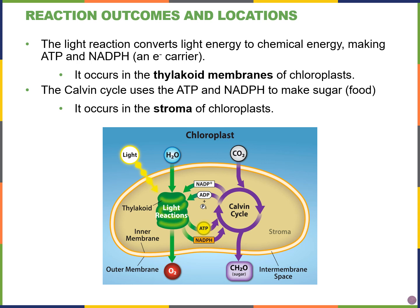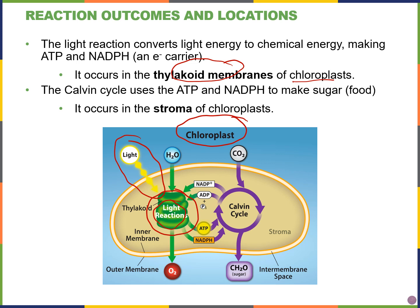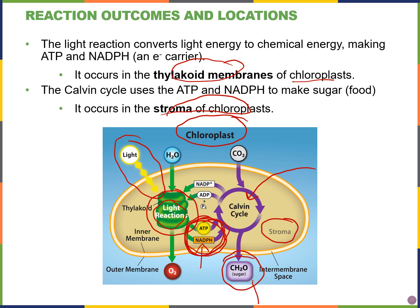Photosynthesis really happens within the chloroplasts of our mesophyll cells. The light reactions occur in the thylakoid membranes of those chloroplasts. Light is captured directly in the light reactions, and products of light reactions include ATP and the high-energy electron carrier NADPH. The Calvin cycle — sometimes also known as the light-independent reactions — occurs in the stroma, the liquid portion of the chloroplasts, and requires the ATP and NADPH generated from the light reactions in order to produce our organic carbon molecules, our sugars. CO2 is also an input in the Calvin cycle.